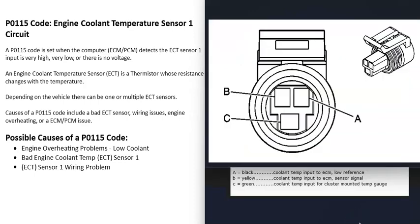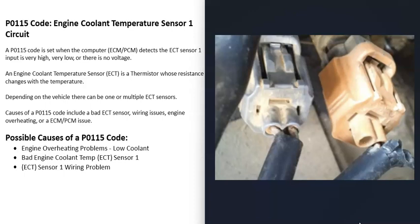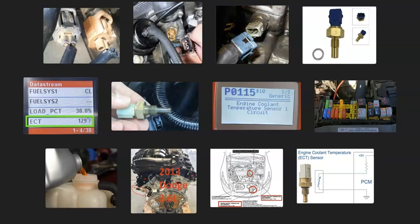For some vehicles, the temperature gauge on the dashboard also gets its information from this sensor, while other vehicles have a separate sensor for that — so be sure to get the correct information for your specific vehicle. In summary, the P0115 code comes down to an engine issue, a bad sensor, or a wiring problem. If you have anything to add, please comment below. If you have any questions, ask and I'll try to answer them. If this video helped you, please like and subscribe, and have a good day.